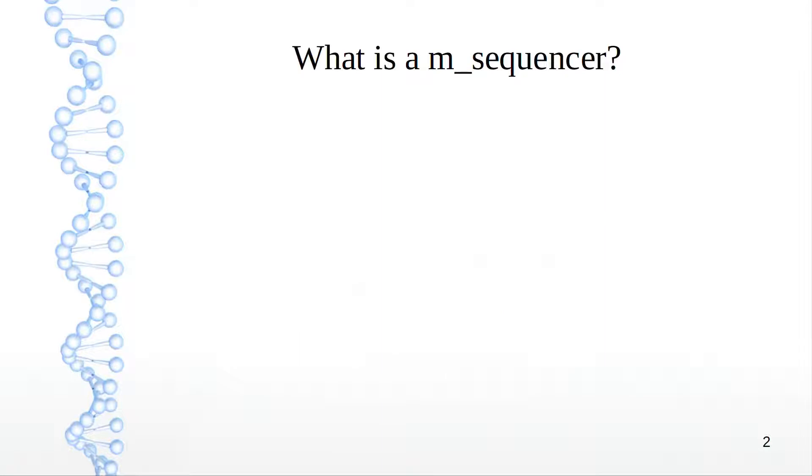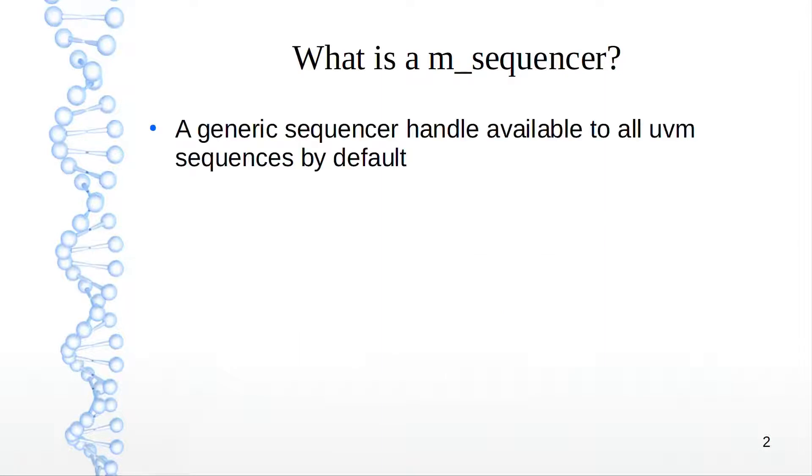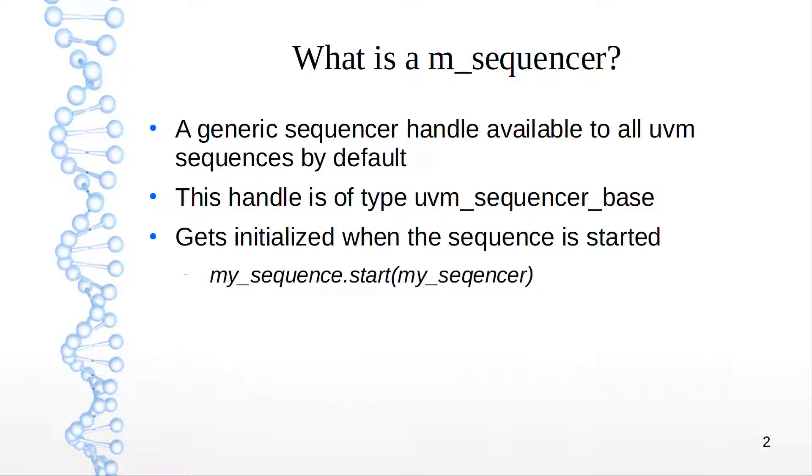What is an m_sequencer? Essentially, it's a generic sequencer handle which is available to all UVM sequences by default. This handle is typically of type uvm_sequencer_base. It gets initialized when the sequence is started, either in another sequence, a top-level sequence, or a test.